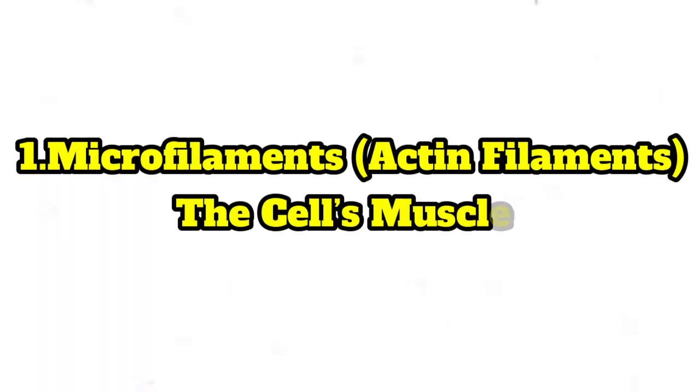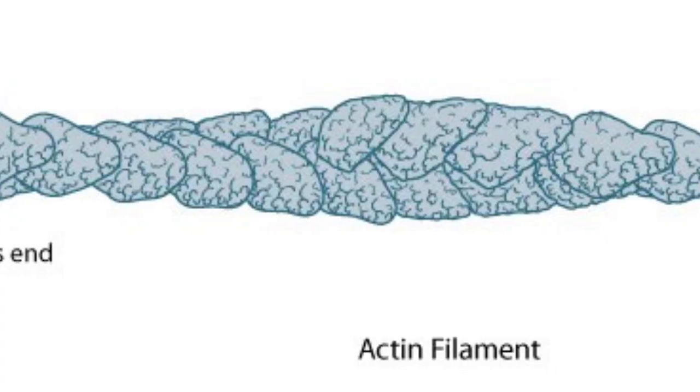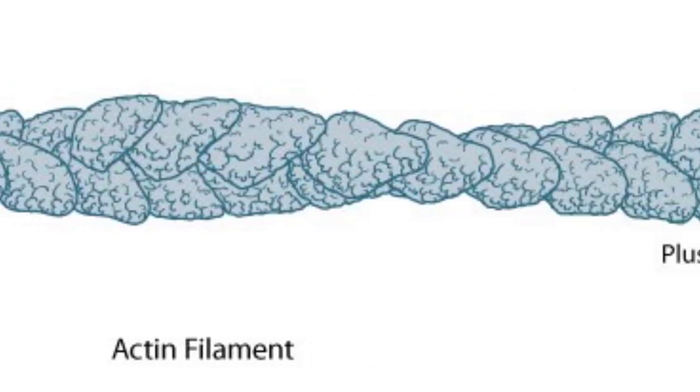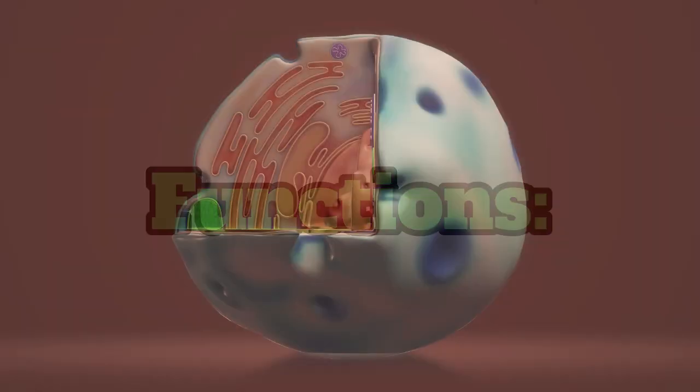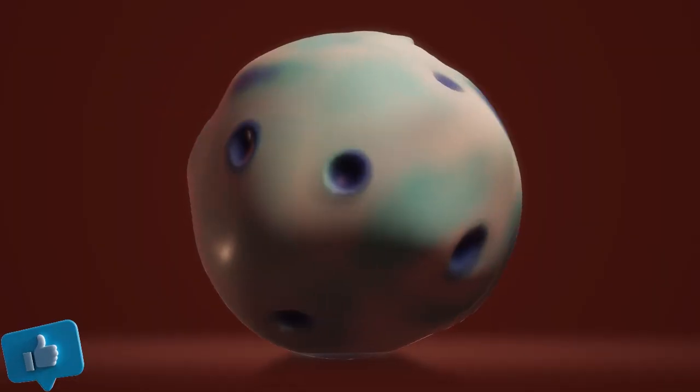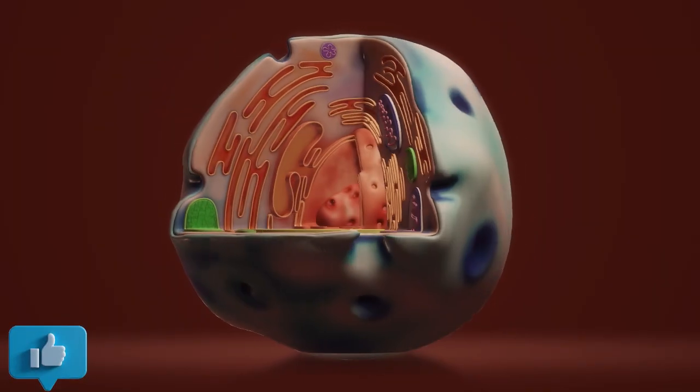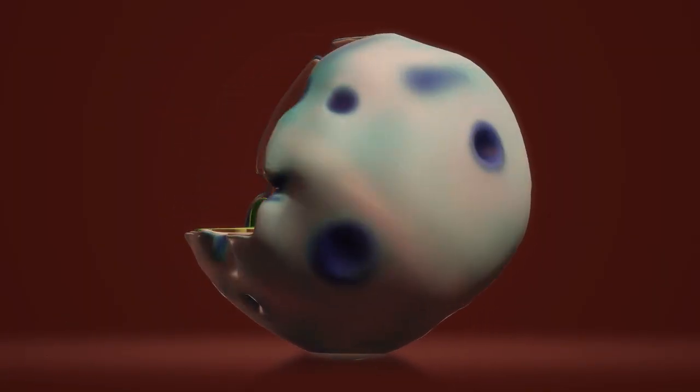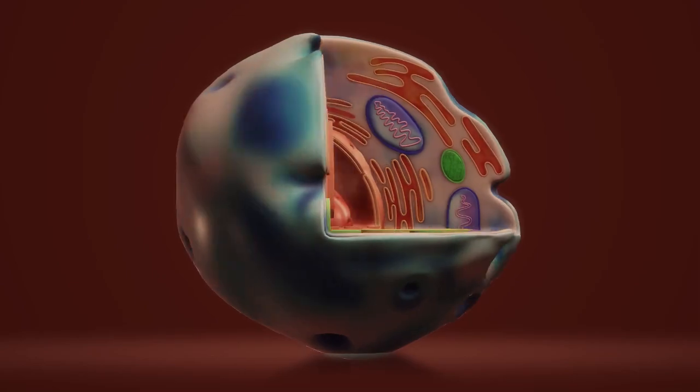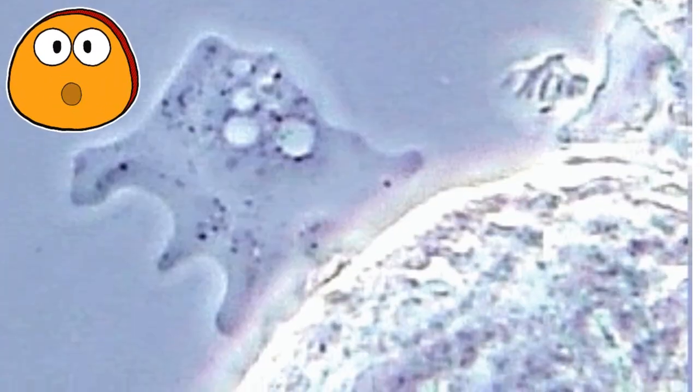Microfilaments, actin filaments, the cell's muscles. Structure: thin, flexible fibers made of actin protein. Functions: helps cells change shape and move, assists in cell division by forming the contractile ring, supports cell membrane structure. Fun fact: amoebas move by reshaping their actin filaments, allowing them to crawl.